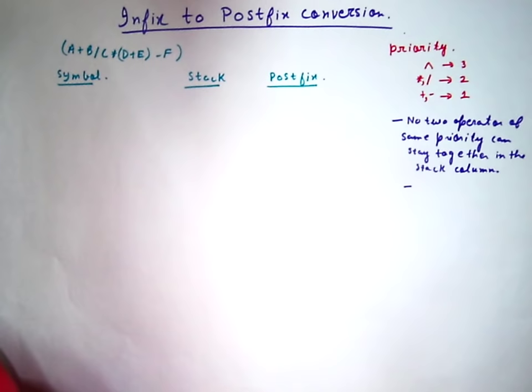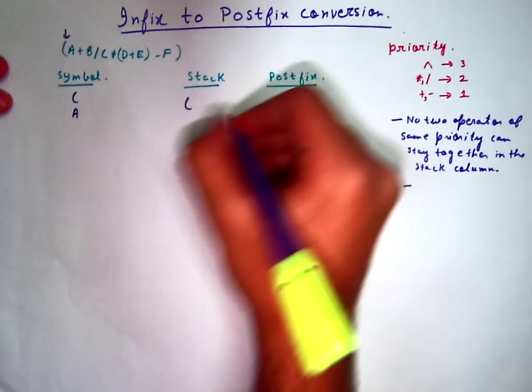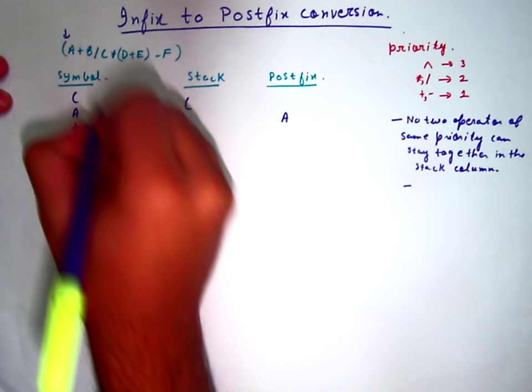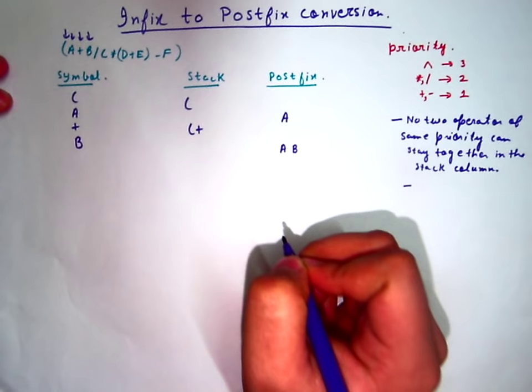See carefully. This bracket comes — put it in the stack column. A comes, add it to the postfix column. Plus, put it in the stack column. V, add it to the postfix column.